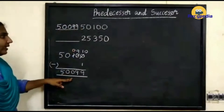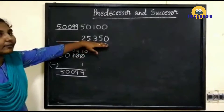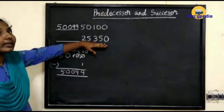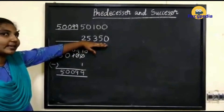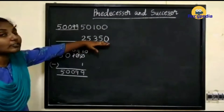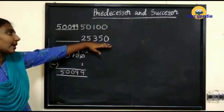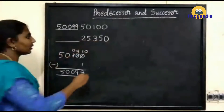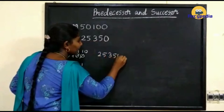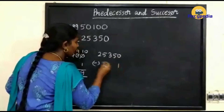Next, the number is 25,350. We are going to find out the predecessor of this number. For that, you have to subtract 1 from this number, so write 25,350 minus 1.